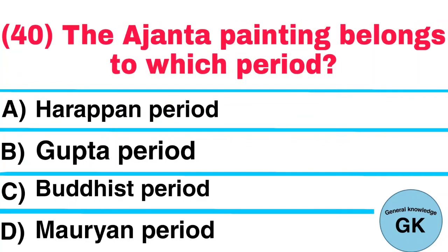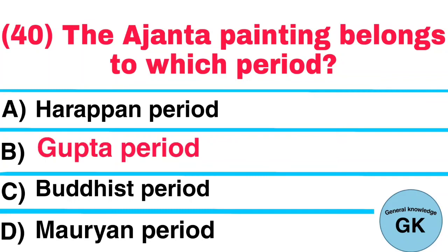Question number 40. The Ajanta paintings belong to which period? A. Harappan period, B. Gupta period, C. Buddhist period, D. Mauryan period. Answer: Gupta period.